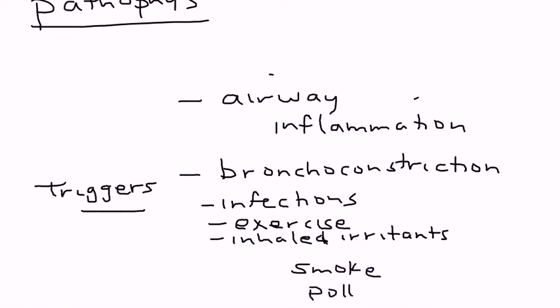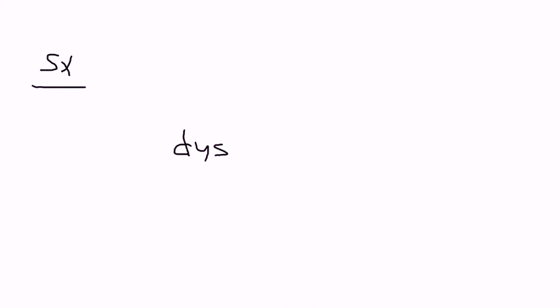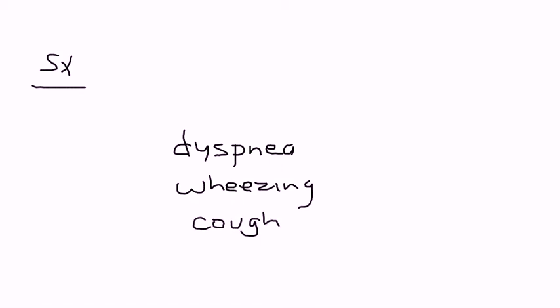Those inhaled irritants include cigarette smoke and pollution in the environment. When a person presents with asthma, the classic symptoms are difficulty breathing, wheezing, cough, and tachypnea — an increased respiratory rate.